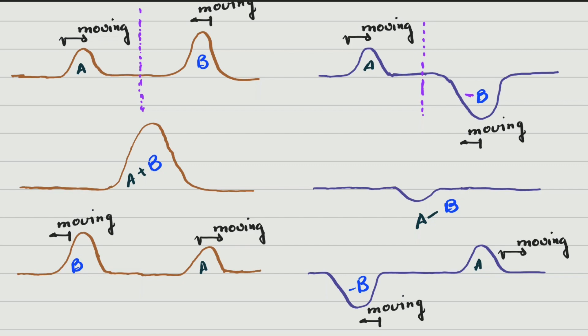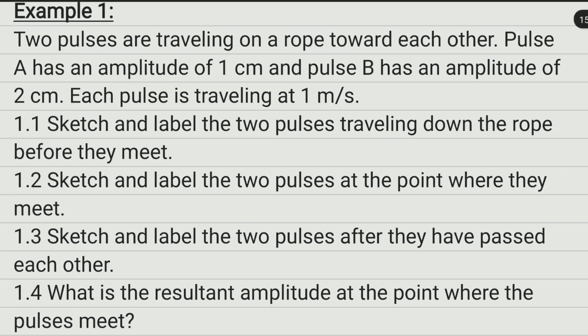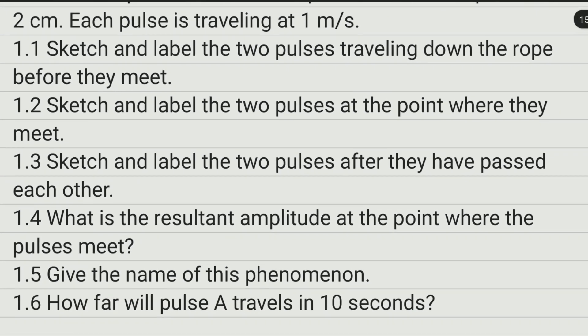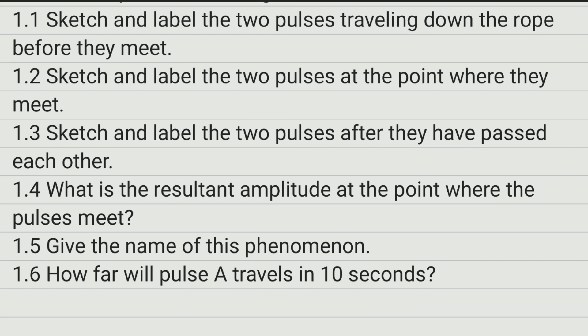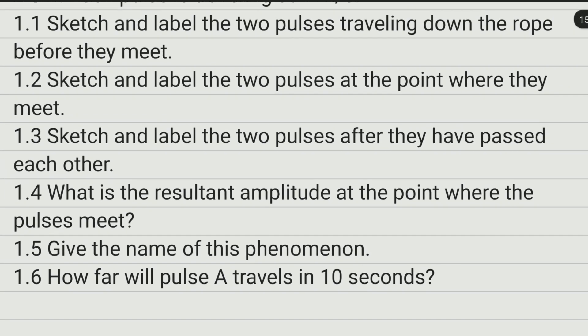Let's look at one example and then we'll finish this lesson. Two pulses are traveling on a rope: pulse A has an amplitude of 1 cm and pulse B has an amplitude of 2 cm. Each pulse is traveling at 1 meter per second. We need to: sketch and label the two pulses before they meet; sketch and label them at the point where they meet; sketch and label them after they have passed each other; find the resultant amplitude; name the phenomenon; and determine how far pulse A will travel in 10 seconds.